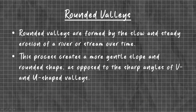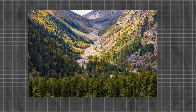Rounded valleys are formed by slow and steady erosion of a river or stream over time. This process creates a more gentle slope and rounded shape, as opposed to the sharp angles of V- and U-shaped valleys. Here is a rounded valley.